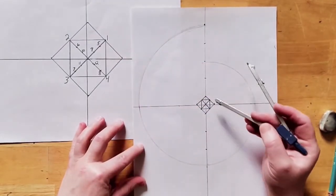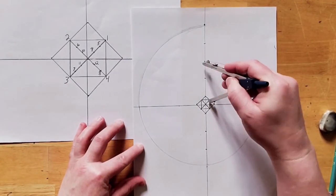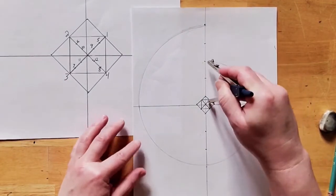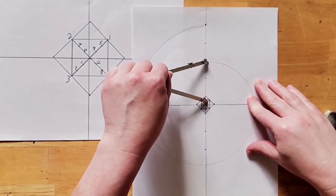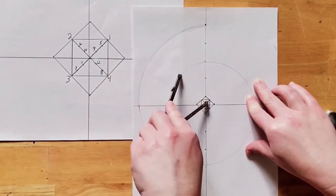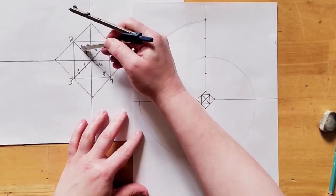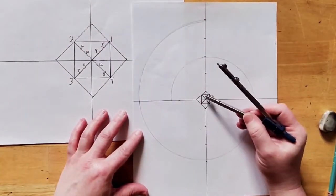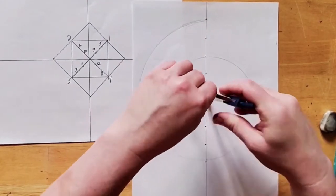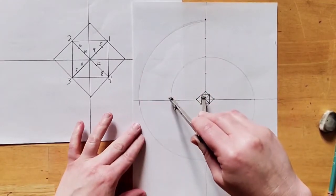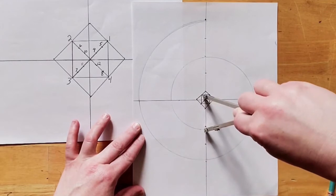Then we move to point five. Make sure you don't push too hard on the compass or it will start to close up as you draw, and that'll mess up our spiral. Now we go to point six. Shorten your compass and continue our spiral. And now we move to point seven.